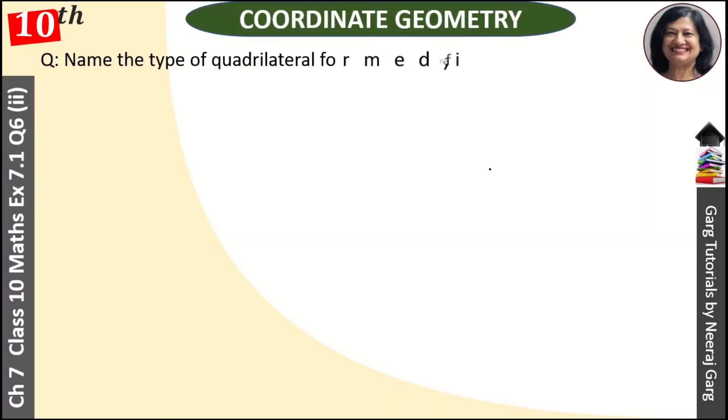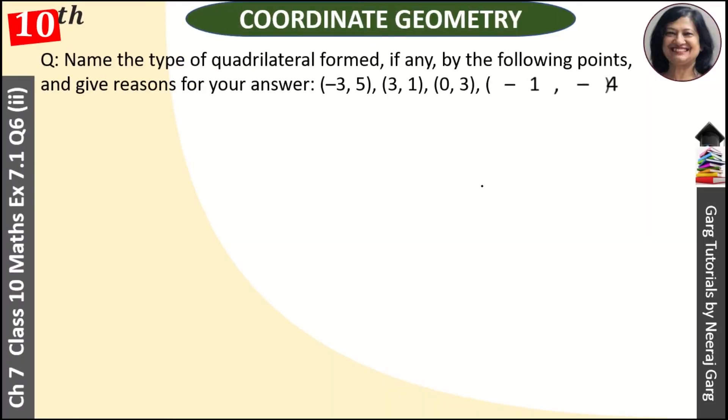Hi, this is Neeraj Kargab and you are watching class 10th chapter 7 coordinate geometry. Name the type of quadrilateral formed if any by the following points and give reason for your answer: (-3, 5), (3, 1), (0, 3), (-1, -4).